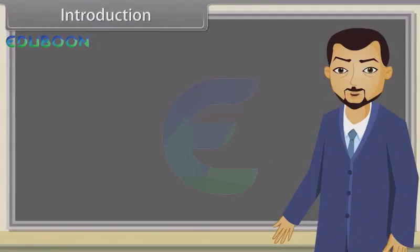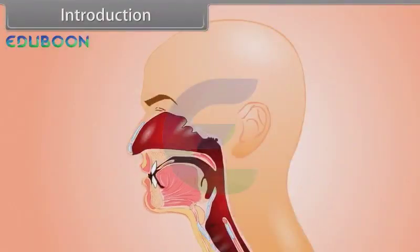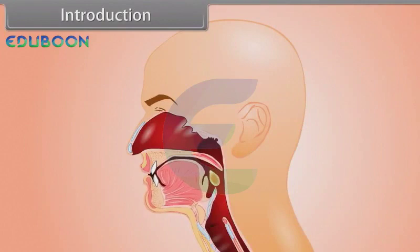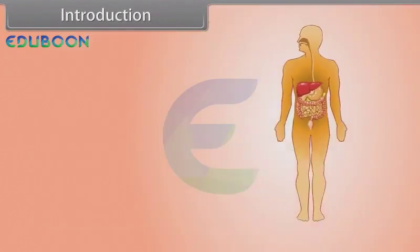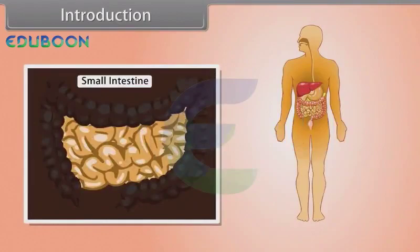Hey kids, we all know that we need energy to live and food is the primary source of energy. But you know that the process of digestion of food starts from the mouth and the action of absorption of energy majorly starts in the small intestine.